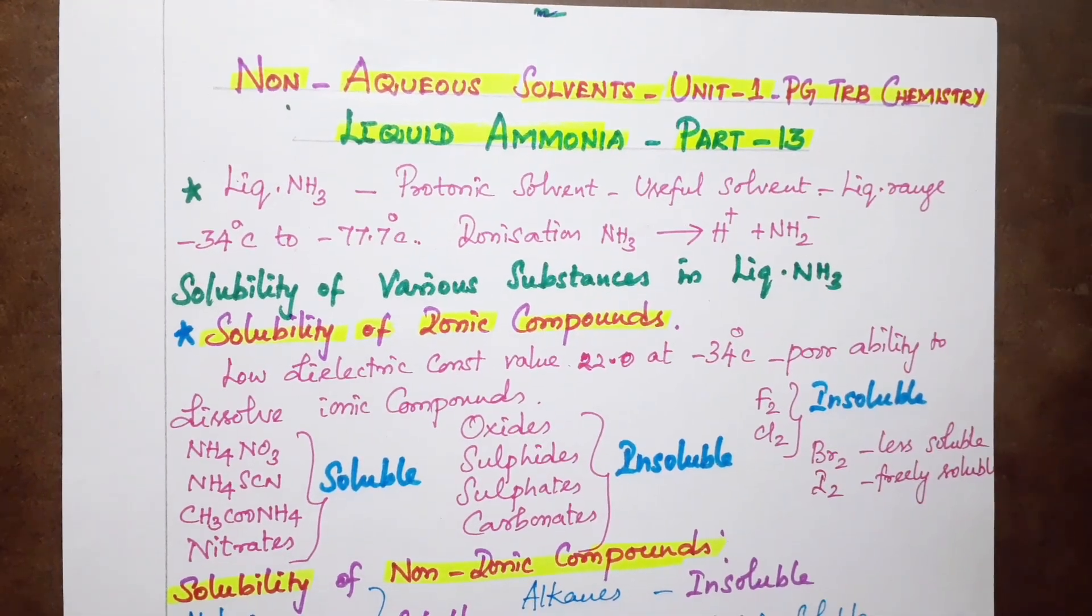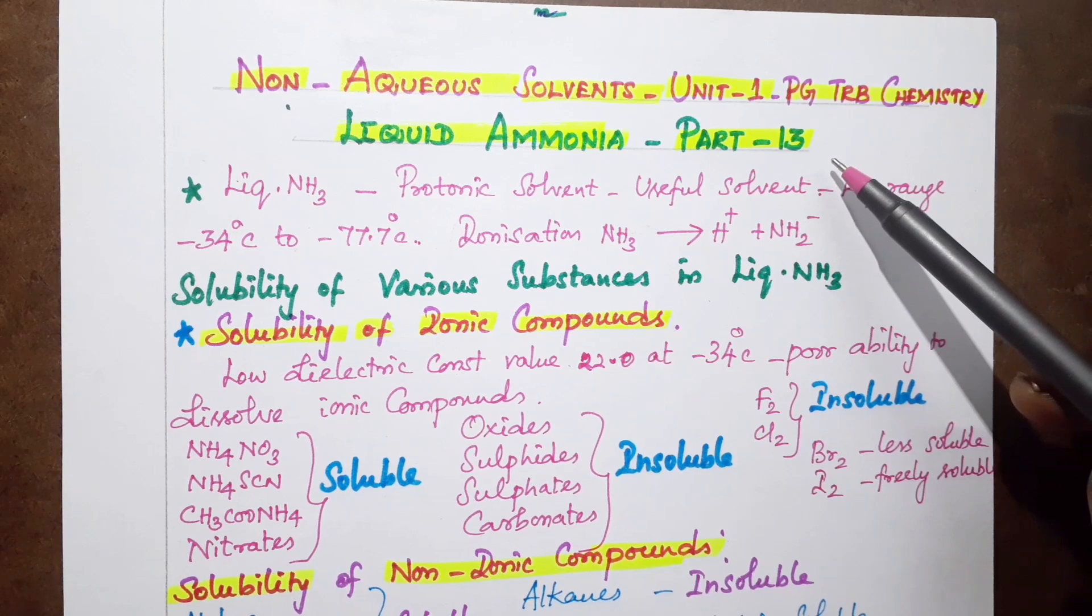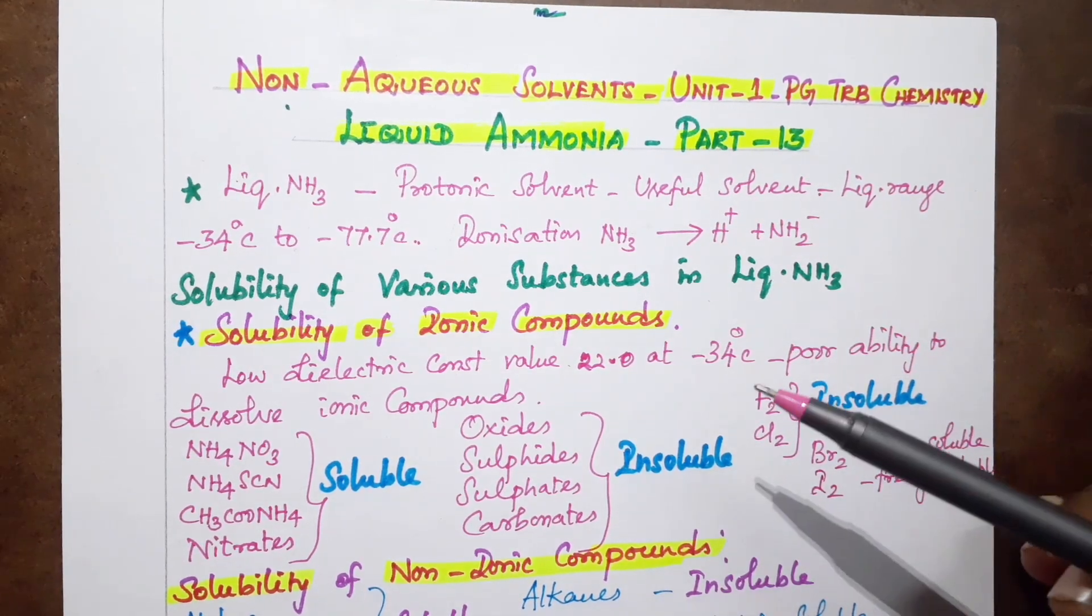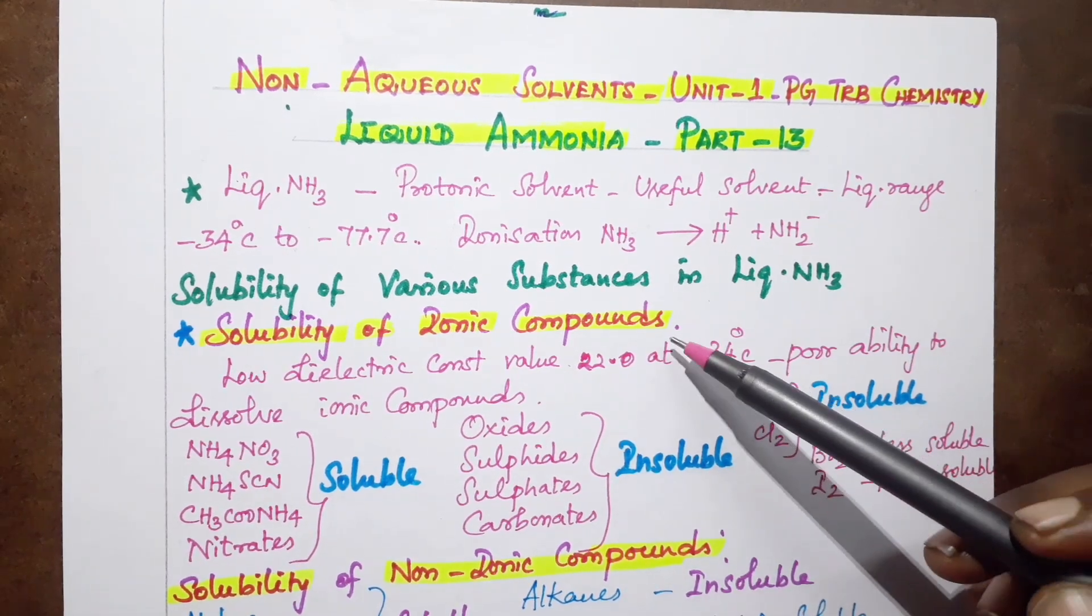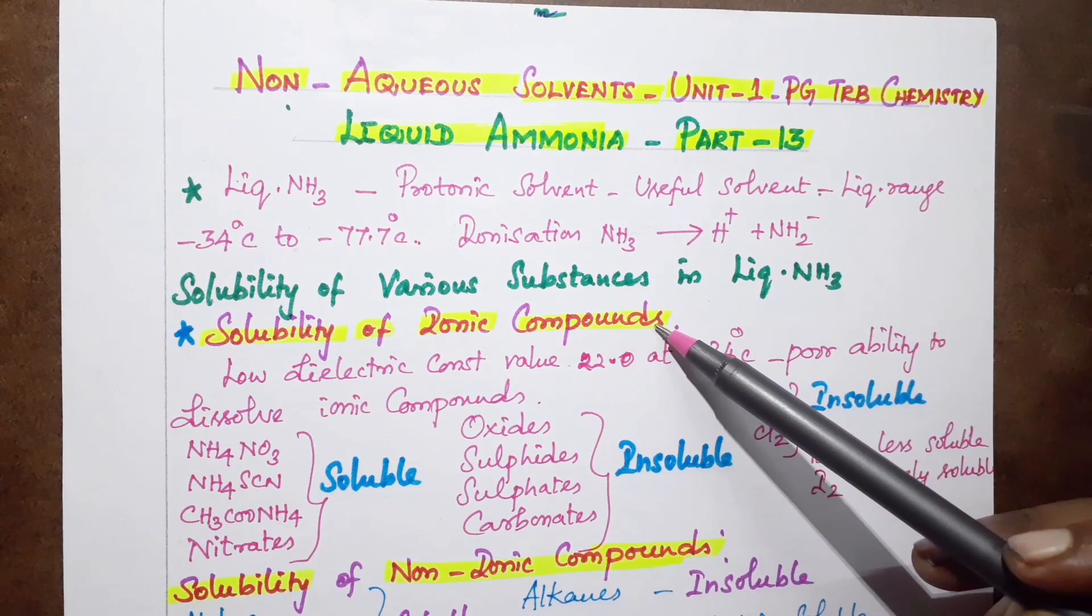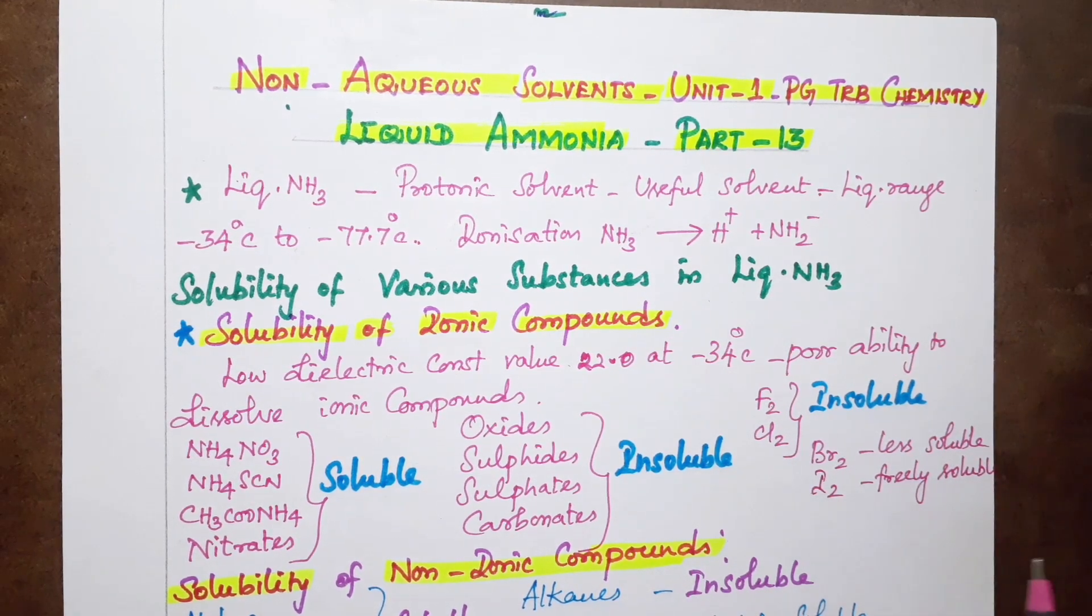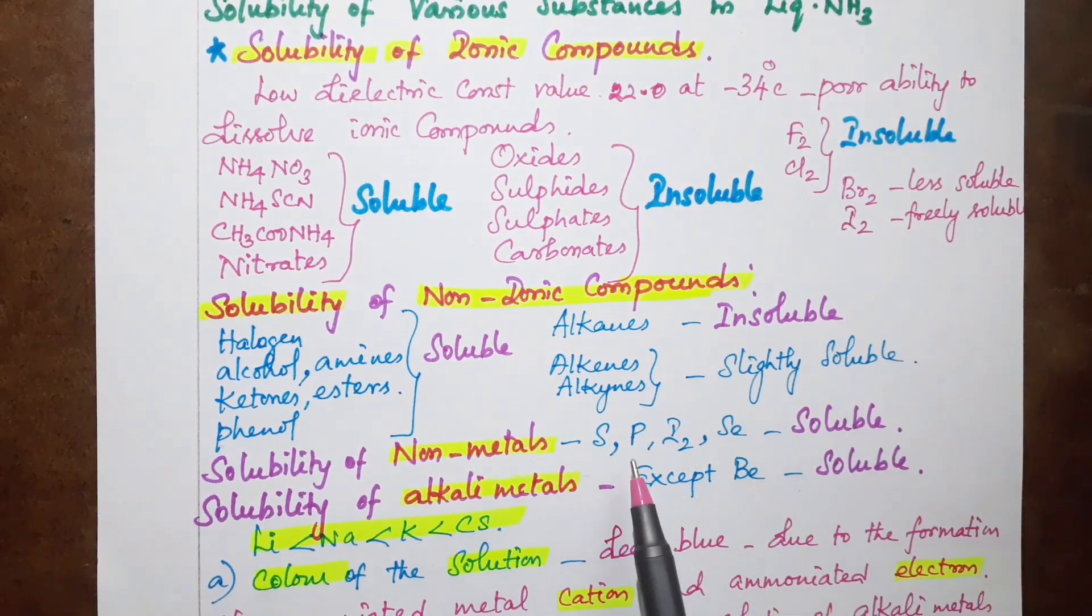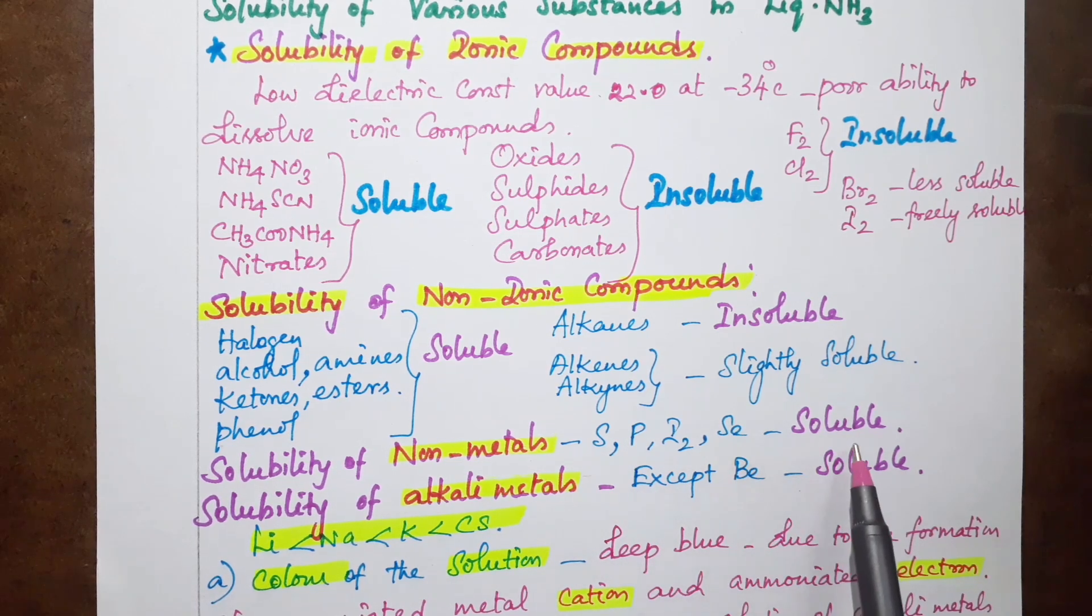In non-aqueous solvents, we covered liquid ammonia. We saw the solubility of various substances in liquid ammonia - ionic compounds, non-ionic compounds, whatever is soluble or insoluble. We need to know that the exceptions are sulfur, phosphorus, iodine, and selenium - they are soluble. The solubility of alkaline metals - they are all soluble.